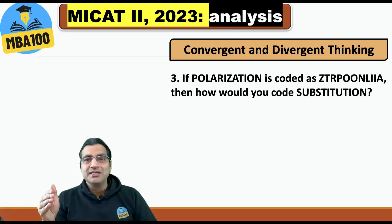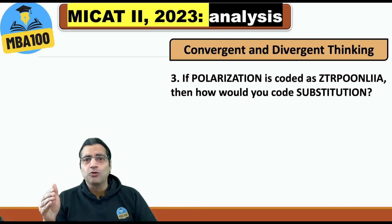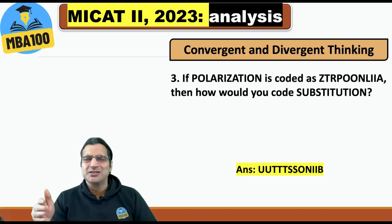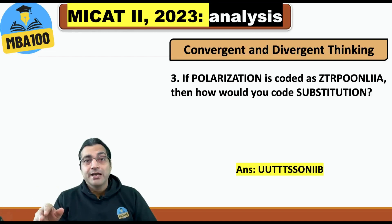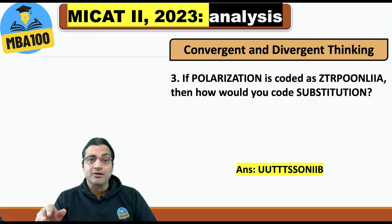Polarization is coded as Z-T-R-P-O-O-N-L-I-I-A. Then how would you code 'substitution'? That was the question, and it was quite simple — you just needed to put the letters in reverse alphabetical order.